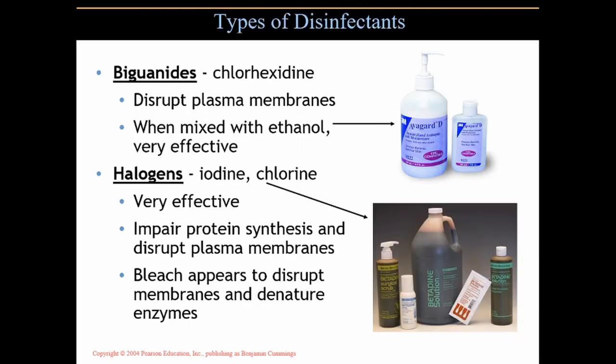Biguanides — chlorhexidine is the active ingredient. They disrupt plasma membranes as well. When mixed with ethanol, it's very effective — what we call a tincture. A tincture is when you take a chemical compound and combine it with an alcohol, typically ethanol. The ethanol becomes a solvent, and that chemical compound mixed with the ethanol is very effective.